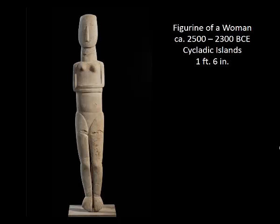The overwhelming majority of Cycladic sculptures look like this one — you've seen one, you've seen them all, because they literally all look like this, varying only in size. This sculpture is one foot six inches, which is actually rather large for this type. They're all women; there's only a very small handful of sculptures representing men. They're very flat — there's a profile image of a similar sculpture in your textbook where you can see just how thin they are. There is evidence of paint traces indicating they were originally painted.